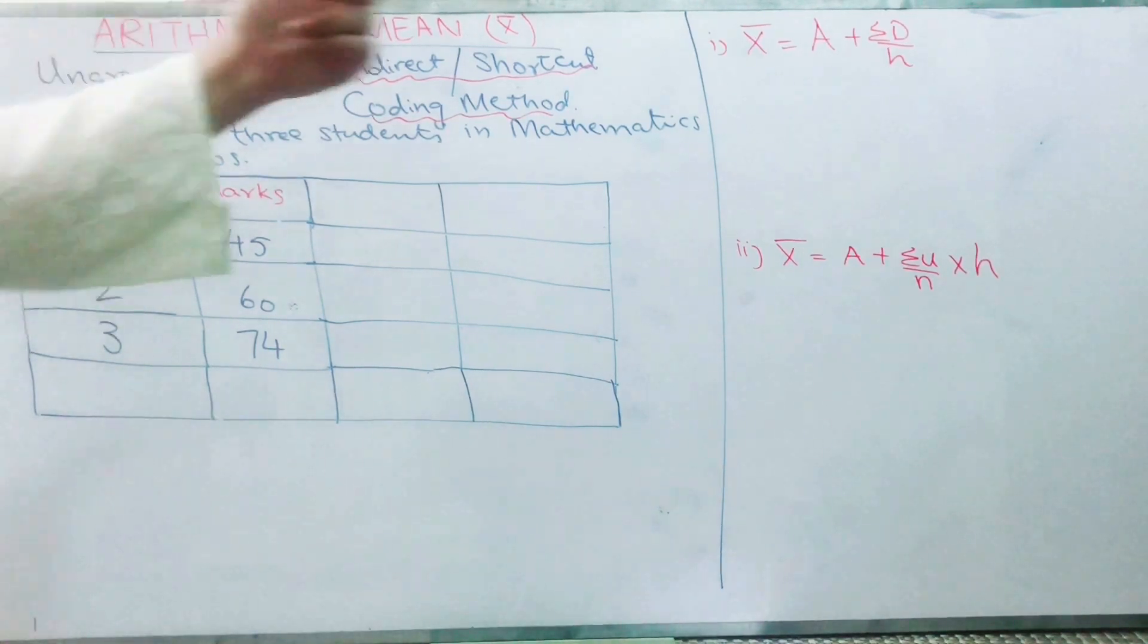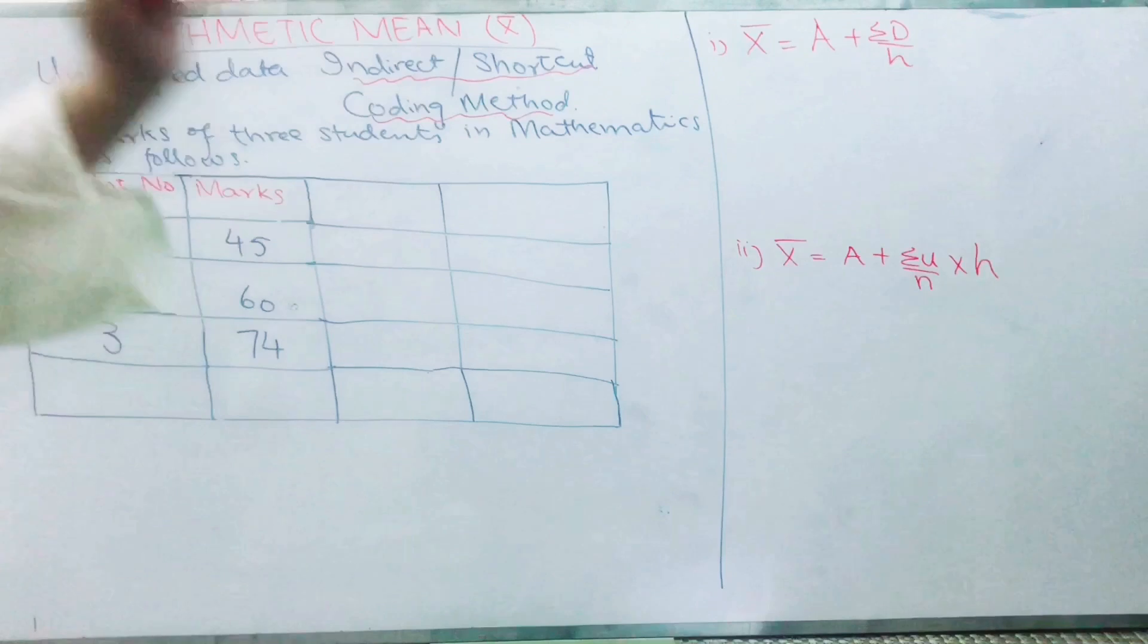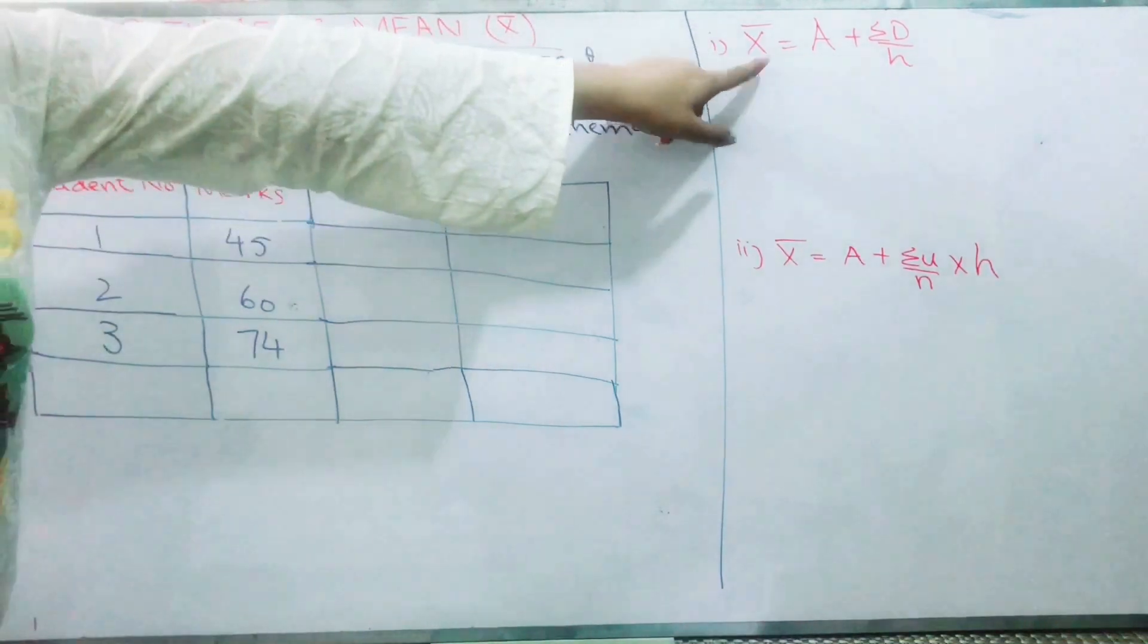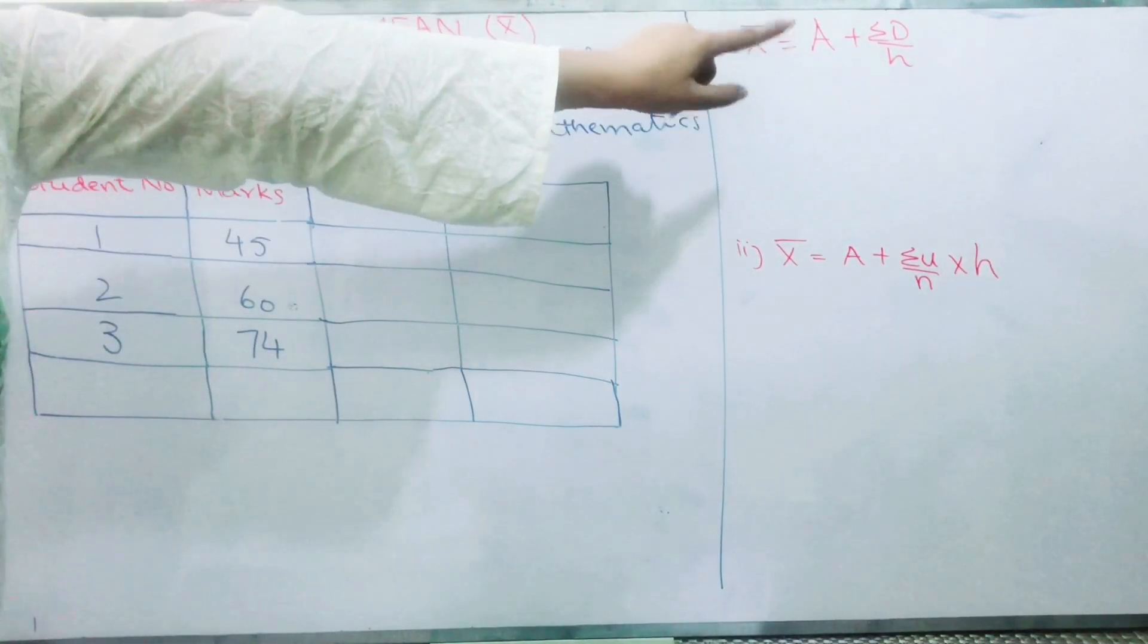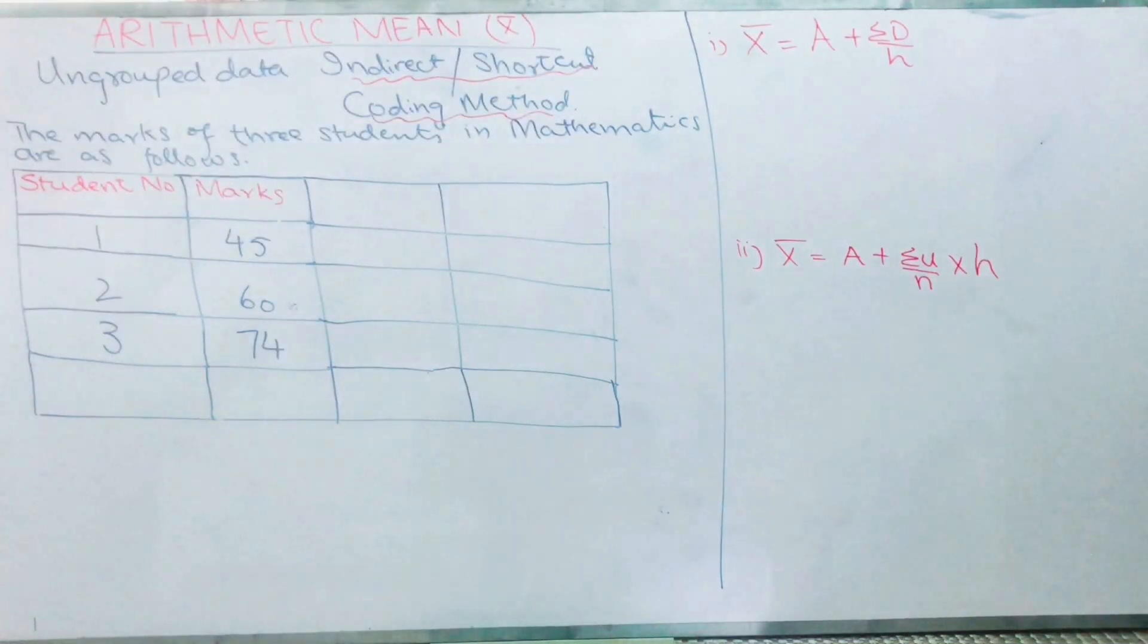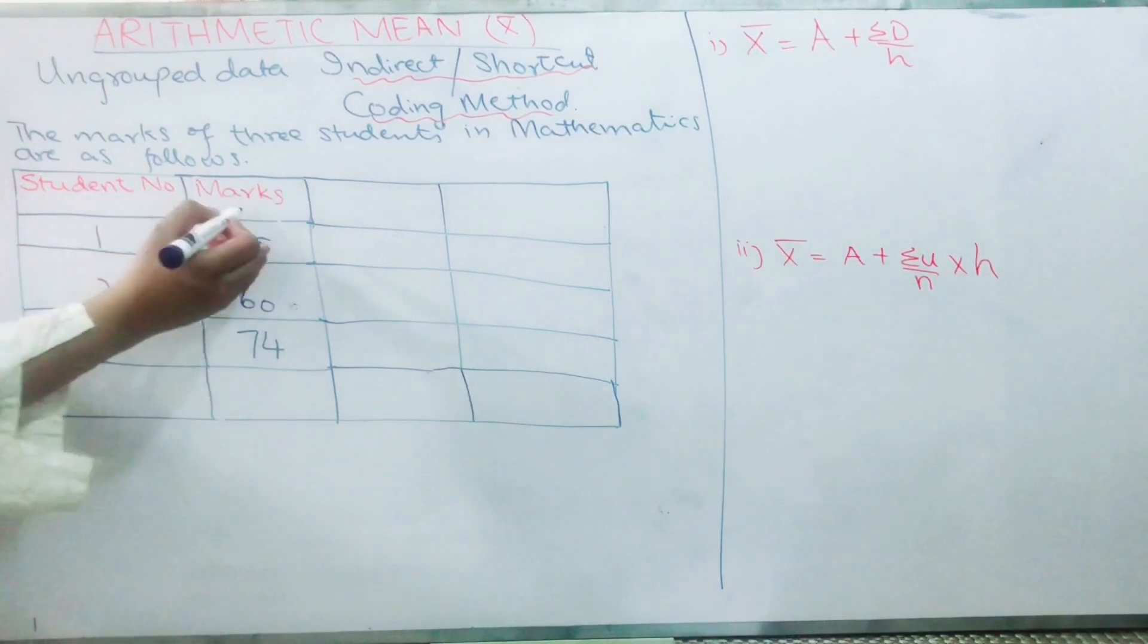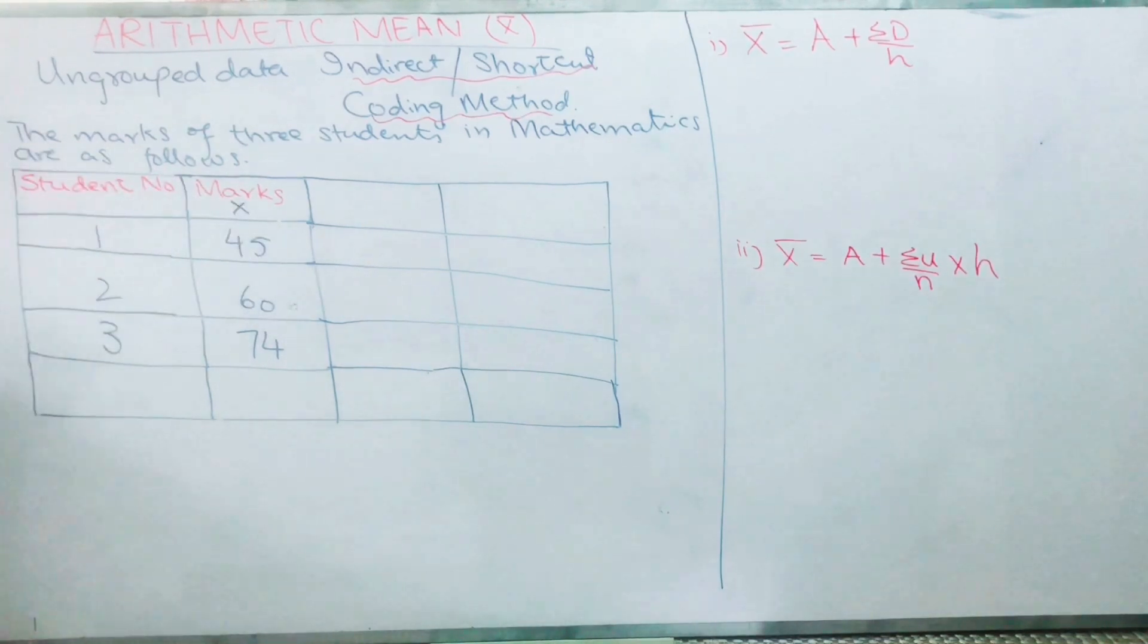Now I have to do this by these two methods. So look, x̄ = A + ΣD/n. It means I should know A, I should know D, and I should know n. What is A? I told you earlier that A can be any assumed value of x. This is my x column.